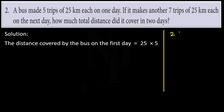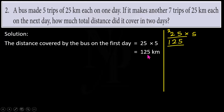Solution: the distance covered by the bus on the first day is equal to 25 into 5, because it makes 5 trips and each trip covers 25 kilometers. Multiplying 25 by 5: 5×5 is 25, write 5, carry 2. 5×2 is 10, plus 2 is 12. That is 125 kilometers. The distance covered by the bus on the first day is 125 kilometers.